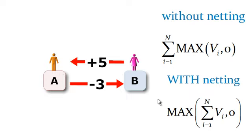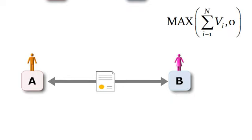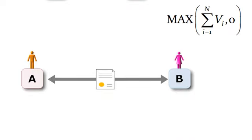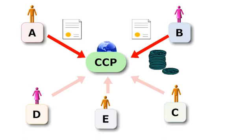So the netting is important, but the role of the central counterparty is really about converting bilateral netting into multilateral netting. So we go back to counterparty A and counterparty B. They enter into the bilateral contract. And let's say instead, they're going to use a central counterparty.